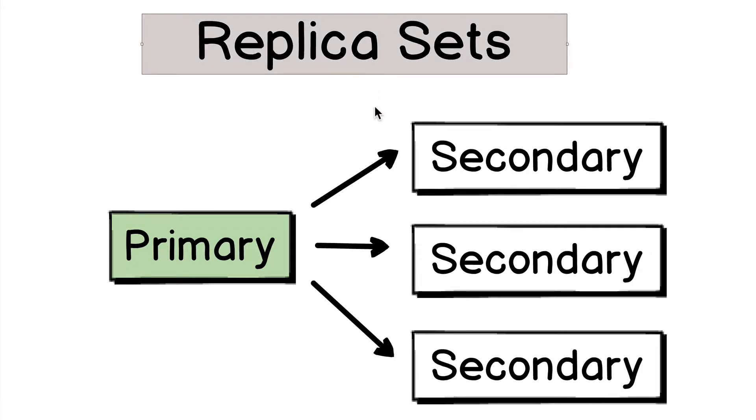A replica set consists of several MongoDB servers, and I have never seen a production database that consists of just one server. In each replica set, there is always only one primary server, and all others are secondary.